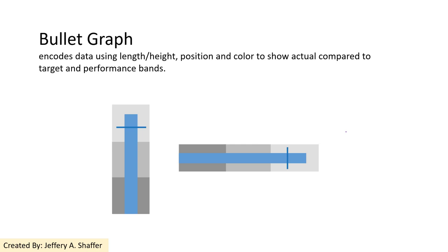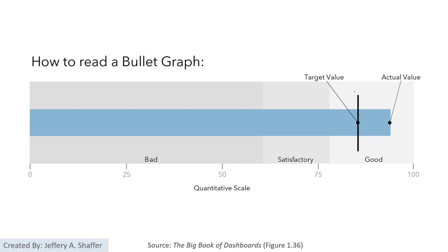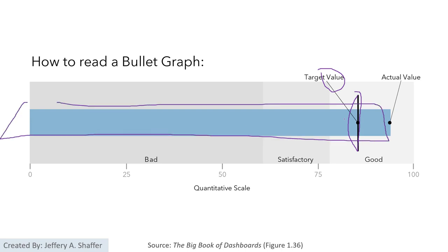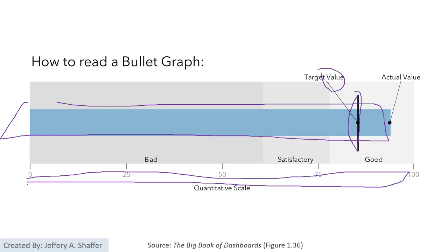We also have the bullet graph. The bullet graph is used to compare two variables — normally a target and actual performance within a specific range. A small bar indicates the target value, and a vertical bar shows the actual value, so we can see whether or not we have reached our target. The shaded areas indicate scales such as bad, good, or satisfactory.